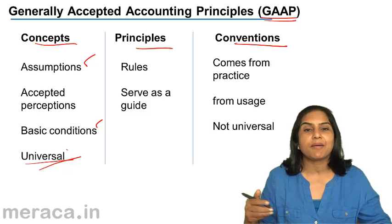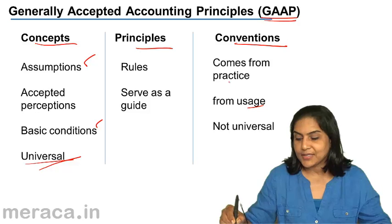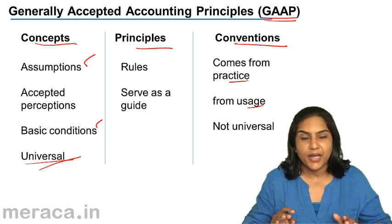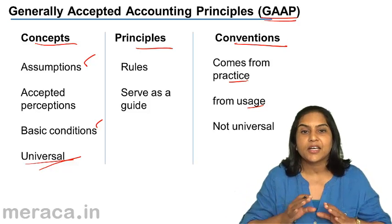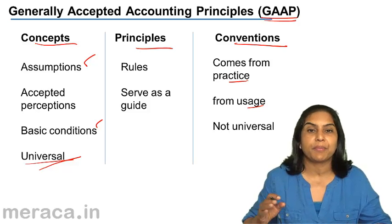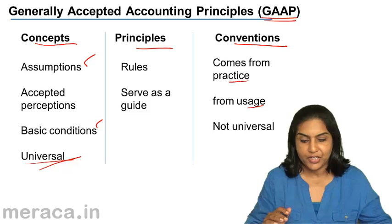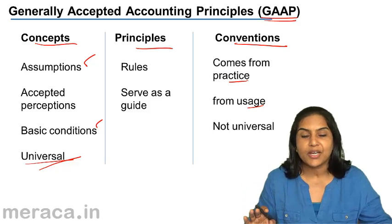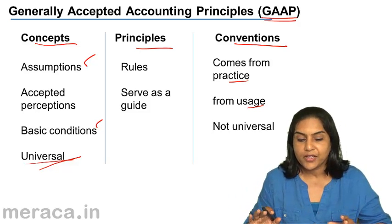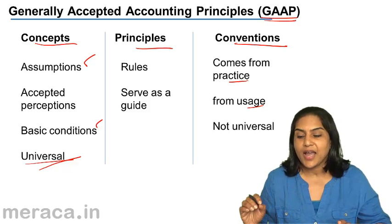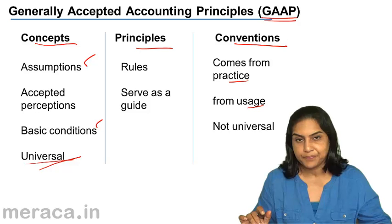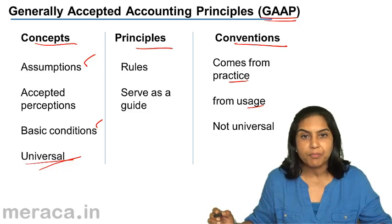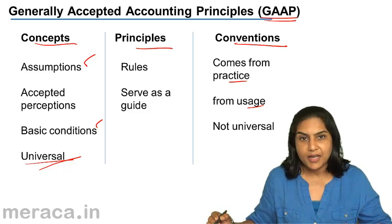And what are conventions? Conventions come from usage — they come from practice. They may not exactly be universal, because the convention of one organization may be different from that of another, and the convention in a particular country or region may be different from that in another. In our discussion, these terms may be used interchangeably. All these together go to form generally accepted accounting principles. We will study some of these more important, more relevant concepts in greater detail.